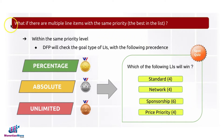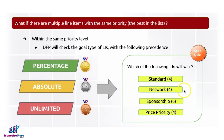Based on this scenario, I want you to think about the answer. You can pause this video for a minute and think about it. Once you have the answer, go ahead and continue watching. The right answer for this scenario is network, with a priority level of four.